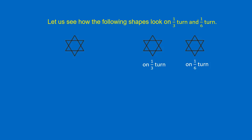Now, look at this shape. On one-third turn, it looks the same. On one-sixth turn, it looks the same. So this shape looks the same on one-third turn and also on one-sixth turn.